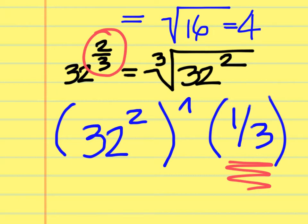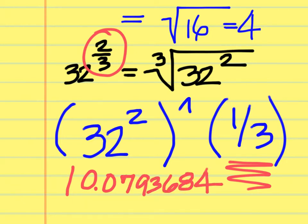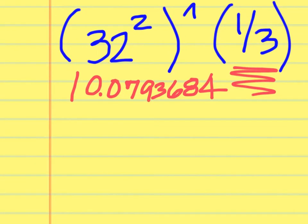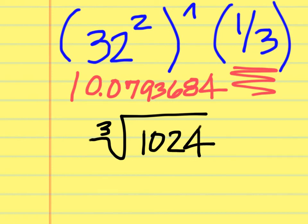When evaluated, the calculator gives approximately 10.079. Since this doesn't come out to a clean integer like the square root of 16 did, there's no need to round to a decimal. Instead, leave it as the third root of 32 to the second power, or simplify to the third root of 1024, which is the most simplified form without decimals.